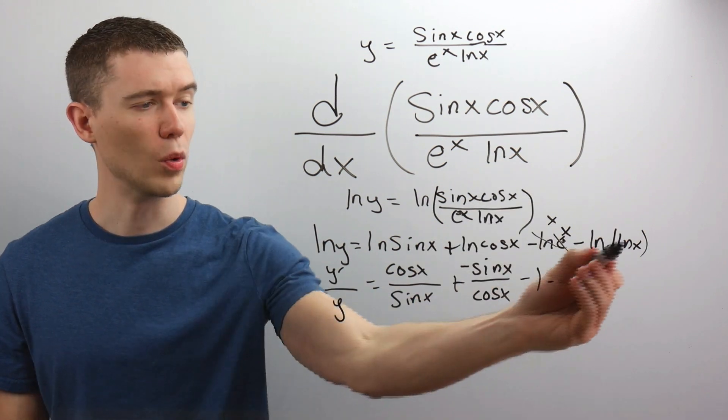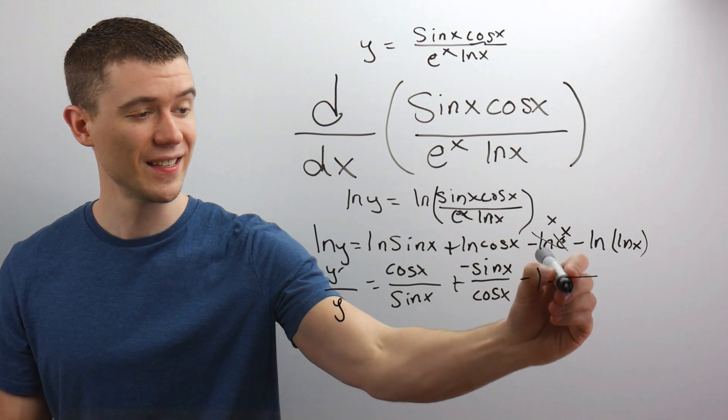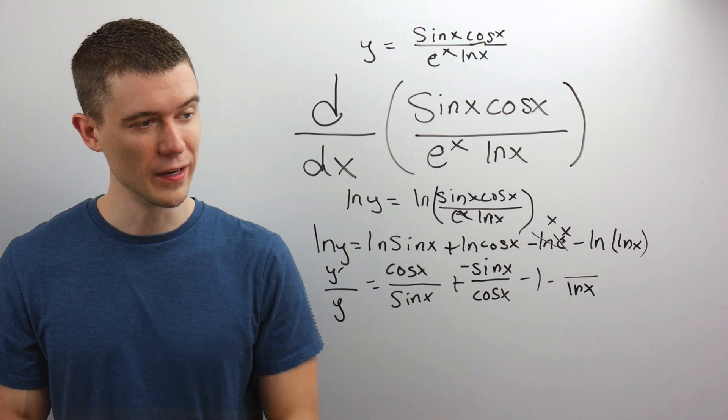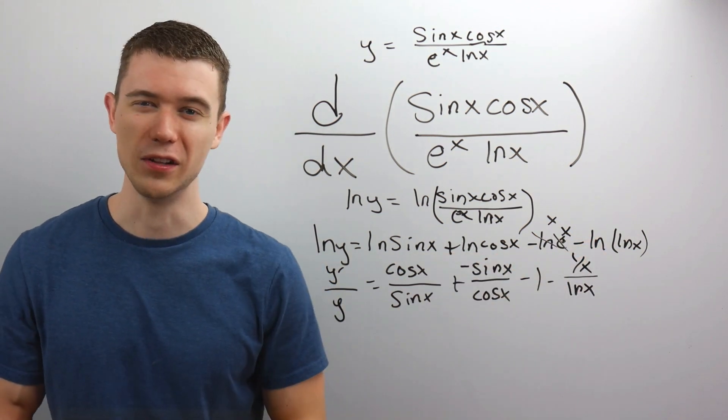The derivative of natural log. Whatever's on the inside goes on the bottom. In this case, the inside is the natural log. And its derivative goes up top. What's the derivative of lnx? It's 1 over x. And you can rewrite that if you like.